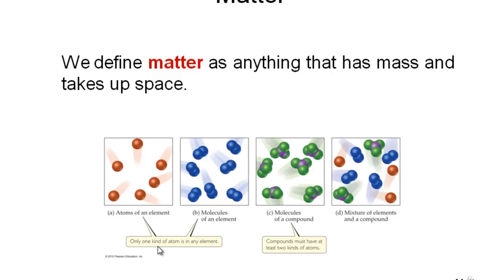Atoms are the smallest building blocks of matter which retain chemical properties. The first picture shows just atoms of an element — if you take a pure element, say copper, those are copper atoms. The second picture shows two spheres joined together. When two or more atoms join together, we call it a molecule. They are not atoms anymore; they are called molecules.